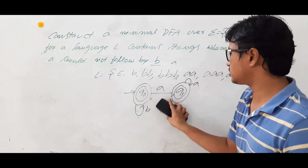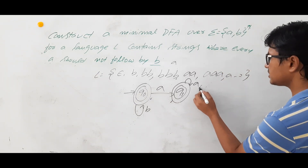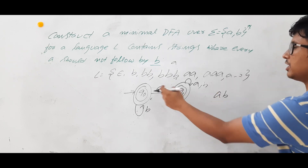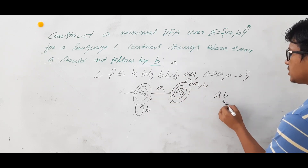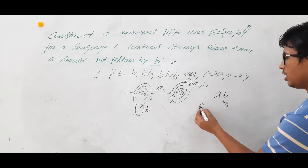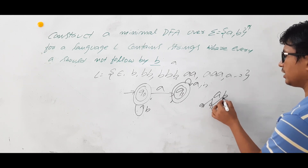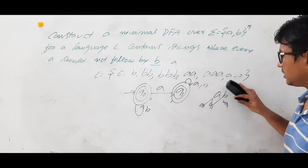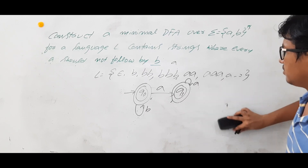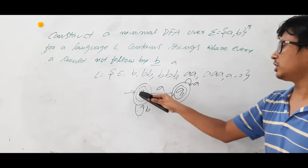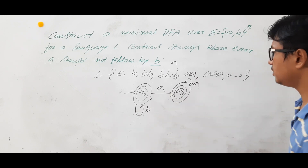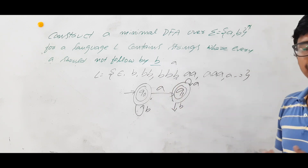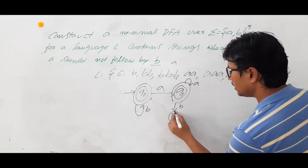If Q1 on B goes to Q1 instead: Q0 on A goes to Q1, Q1 on B stays at Q1, and Q1 is a final state — so AB would again be accepted. That is also incorrect. Since B after A must not be accepted, Q1 on B must go to a dead state D, which is a non-final state.